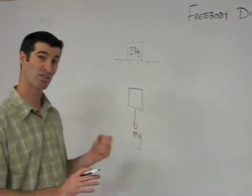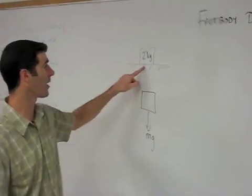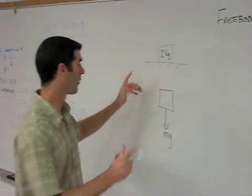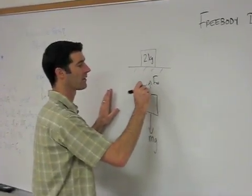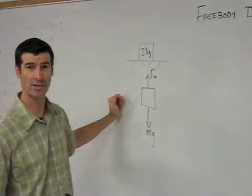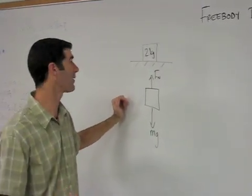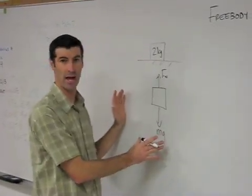After you draw Mg, try and look for what's touching the actual object. In this case, the ground is offering a support force. We have a special name for our support forces. We call that the normal force, F sub n. Look, is there anything else touching this box? We're neglecting air resistance, so nothing else is touching the box. Those are going to be our only two forces acting on it.